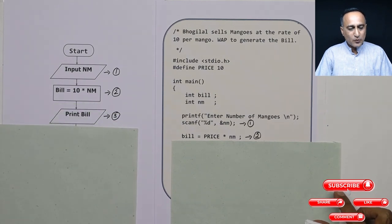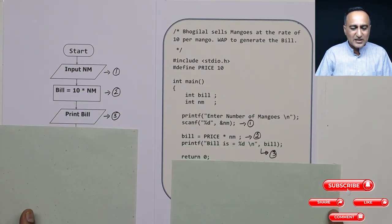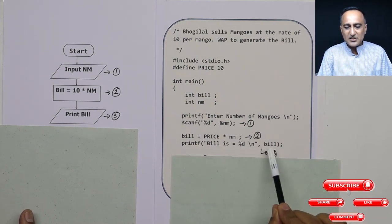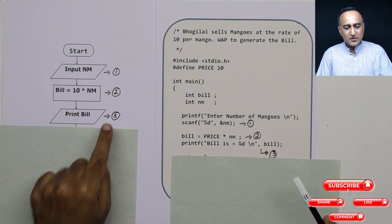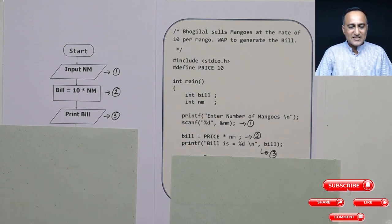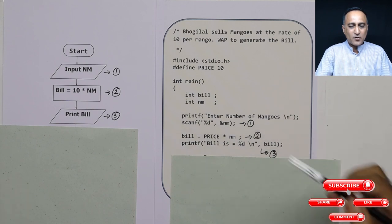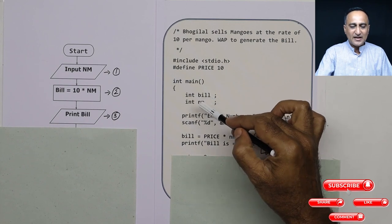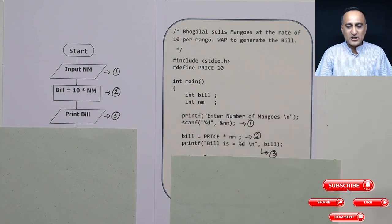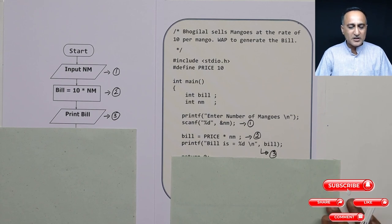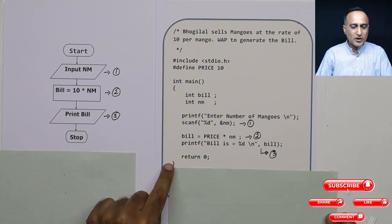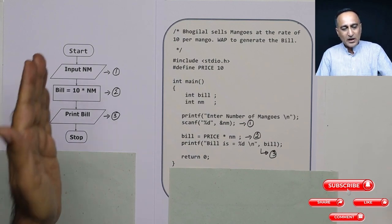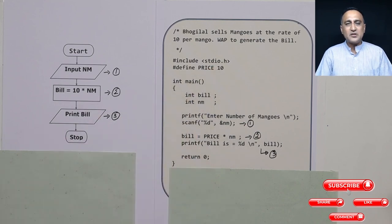Now in the next step, I am simply printing the bill, whereas in the program, I just need to write the printf statement and say bill is %d and bill. So step number three matches with step number three. Since the cost per mango is 10 and I can only buy full mangoes, I have defined bill as an integer and number of mangoes has always got to be an integer. Here you can see I have stopped; here also have ended the program. Now hopefully you have got a very good link between how logic is transformed into a piece of code.